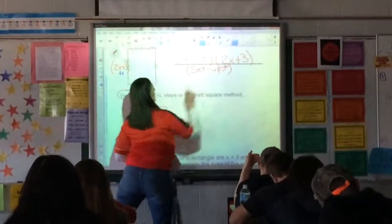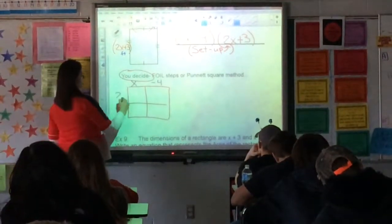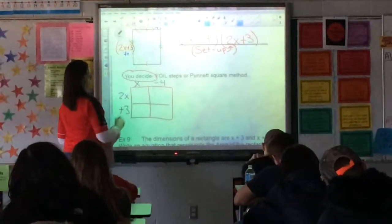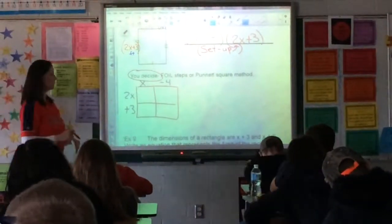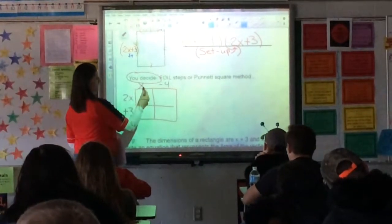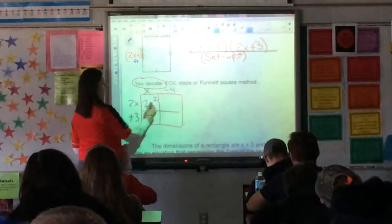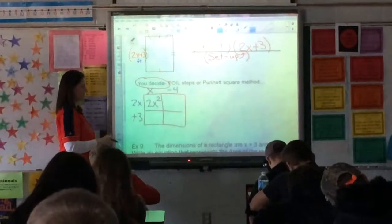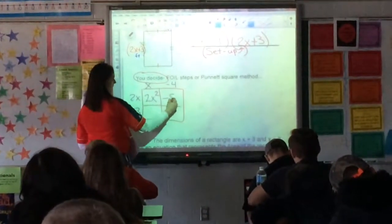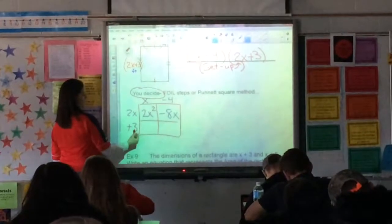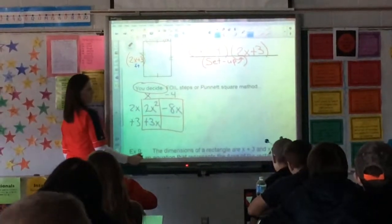So we're going to take our x minus 4 across the top, and our 2x plus 3 along the side. And you're ready to multiply to make the boxes. 2x times x, 2x to the power of 2, so 2x squared. 2x times negative 4 is negative 8x. 3 times x, and 3 times negative 4.